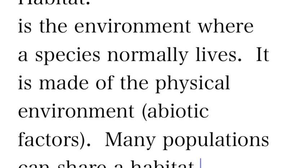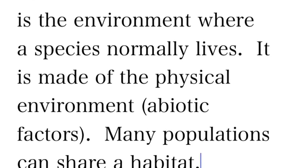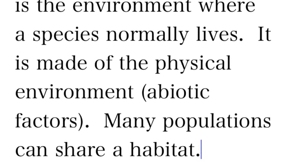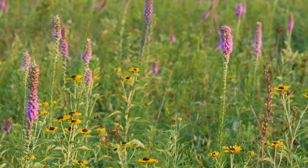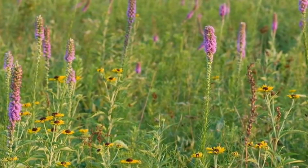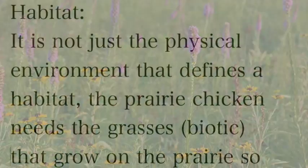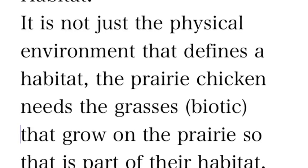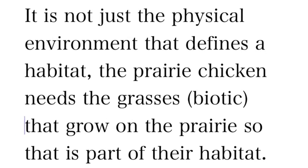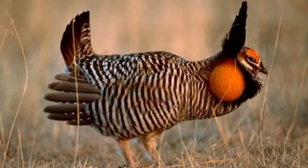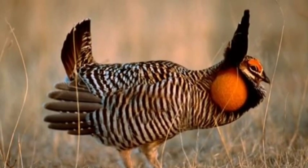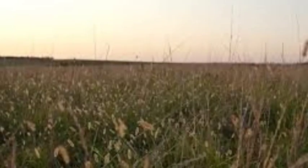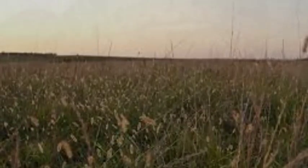A habitat is the environment where you normally find a species, or where it likes to live. It's made up of physical characteristics — abiotic factors — like sunlight, temperature, climate, and seasons. But it's not just the physical characteristics; it also includes the biotic characteristics already living there. For example, a prairie chicken has to live within certain grasses that it needs to eat, hide in, make its nest out of, and lay its eggs in.